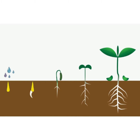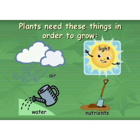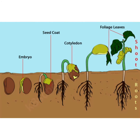A seed starts growing into a baby plant called the seedling. What are the things needed to grow a new plant? Air, water and warmth.